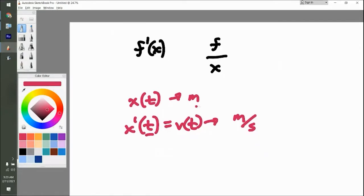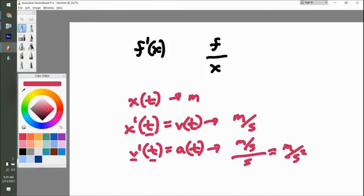Now, if you do the derivative of velocity, you get acceleration. These units would be whatever the unit of velocity is, which is meters per second, divided by whatever the unit of time is, which is seconds. This is why it's meters per second squared, all you physics people.